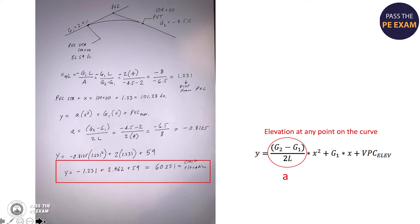And there it is. It's that simple. You have to make sure that you just have to be careful with your negatives. That is important because here you have a negative for A, which is negative 0.8125, and you're multiplying it by a positive 1.231 squared. So that remains a negative number. So when you add that negative to 2.462, it's ultimately taking it away from it and you get 60.231.